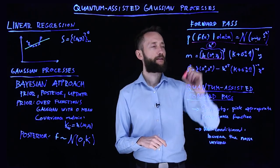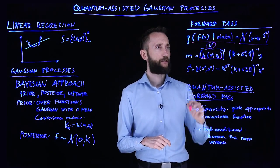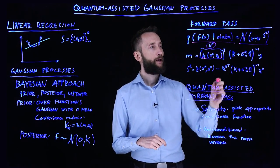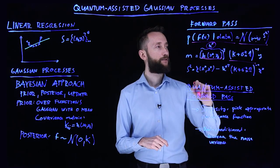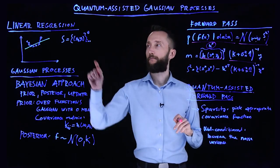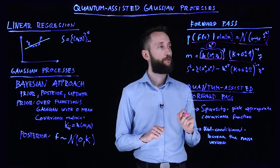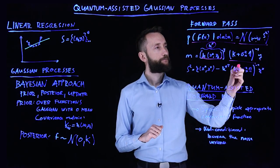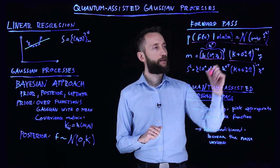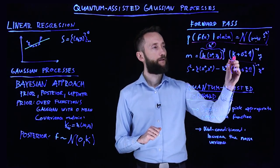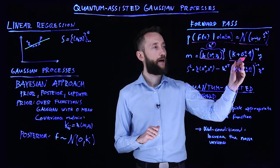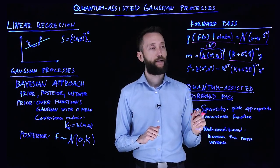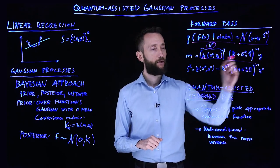I'm going to denote that as k asterisk. And then we multiply it with the inverse of this matrix and the y-vector, the vector of the labels. So now this is something that we have to invert. So we have the kernel matrix and the diagonal is biased by the variance of the data. So this is one inversion.